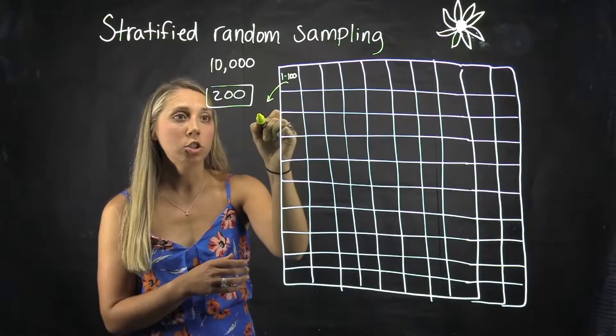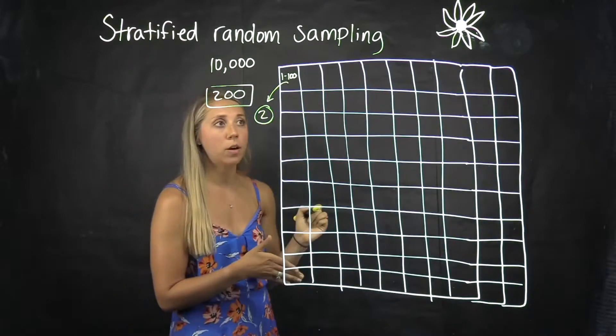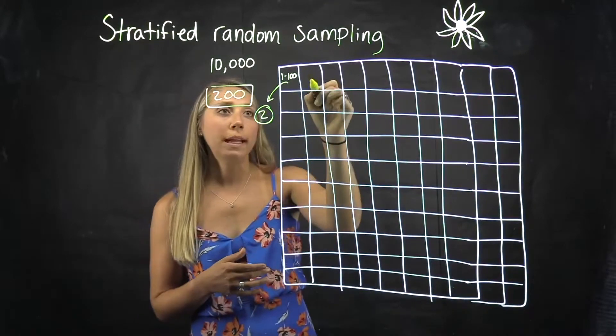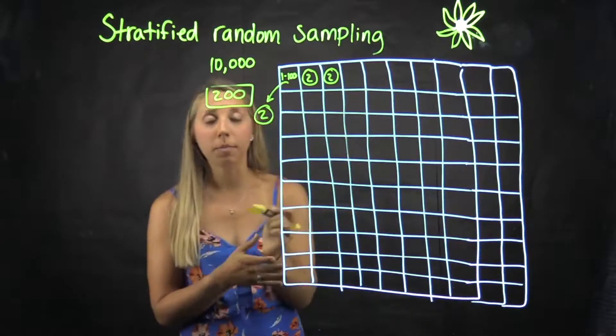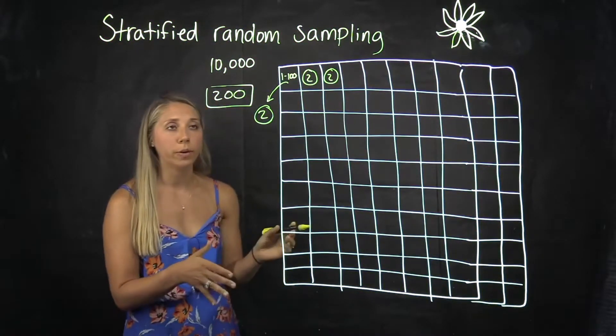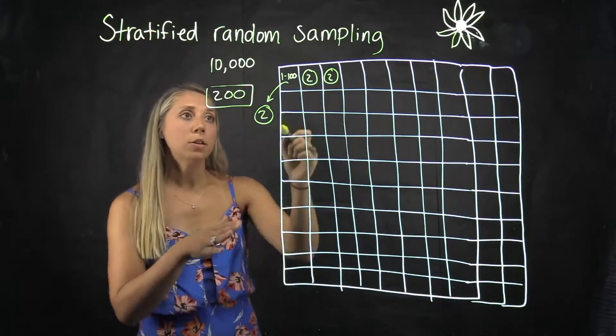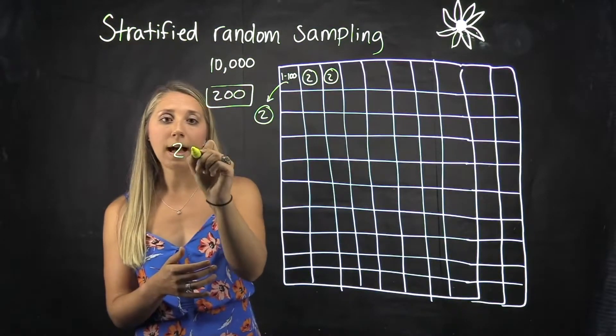From each plot we're going to take two after we number them all 1 to 100. We're going to take two of them, so then once you have two from all 100 plots, you have 200 sunflowers total to measure, which is what we wanted.